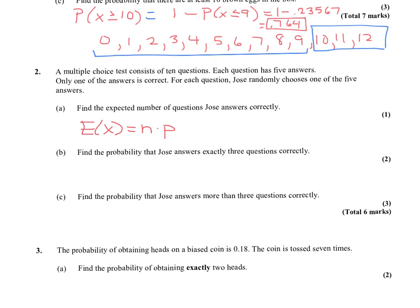The problem: a multiple choice test has 10 questions, each with five answers, only one correct. Jose randomly chooses one of five answers each time. This is binomial because each trial has two outcomes (right or wrong), each question is independent since he's choosing randomly, and the probability of being correct is the same every time: one in five. So E(X) = 10 times (1/5) = 2 expected correct answers.